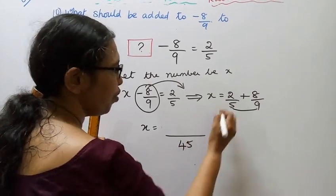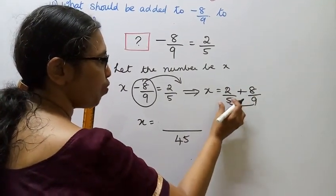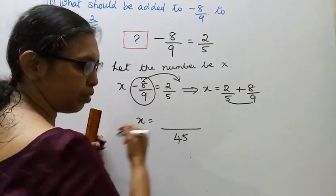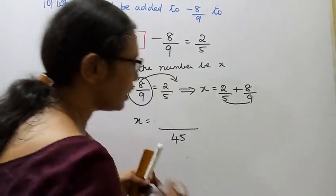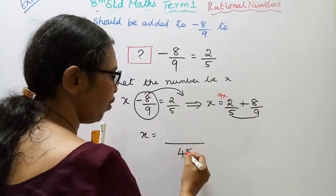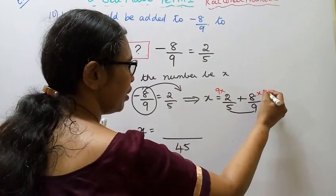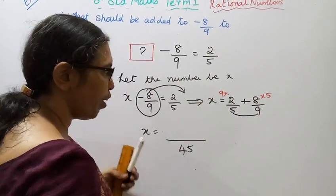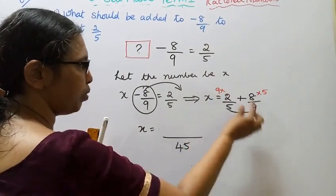5 times 9 is 45. For 2 by 5, multiply by 9: 2 times 9 is 18. For 8 by 9, multiply by 5: 8 times 5 is 40.